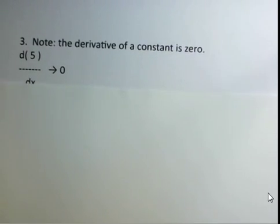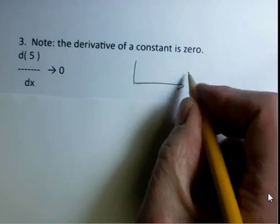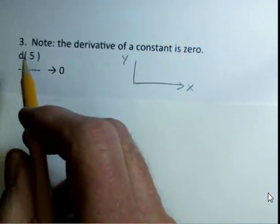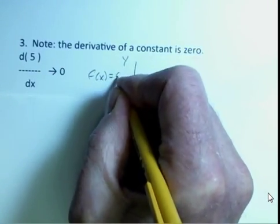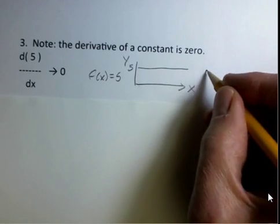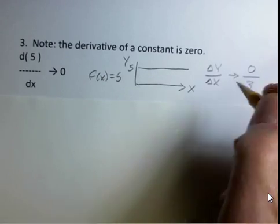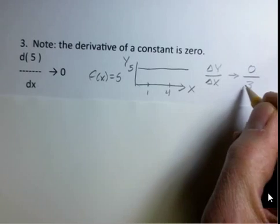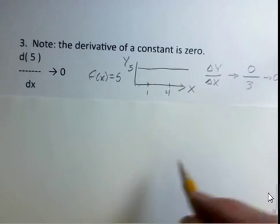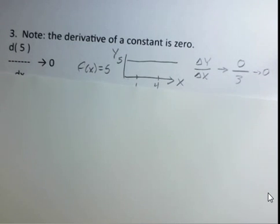What about the derivative of a constant? This would be the case of 5x to the 0. If we graph this, thinking about the derivative as related to slope — here's x and here's y — if f of x equals 5, the y value is always 5, giving a horizontal line. The slope of a horizontal line is delta y over delta x. The delta y is 0, so the slope is 0. The derivative of a constant function is equal to 0.